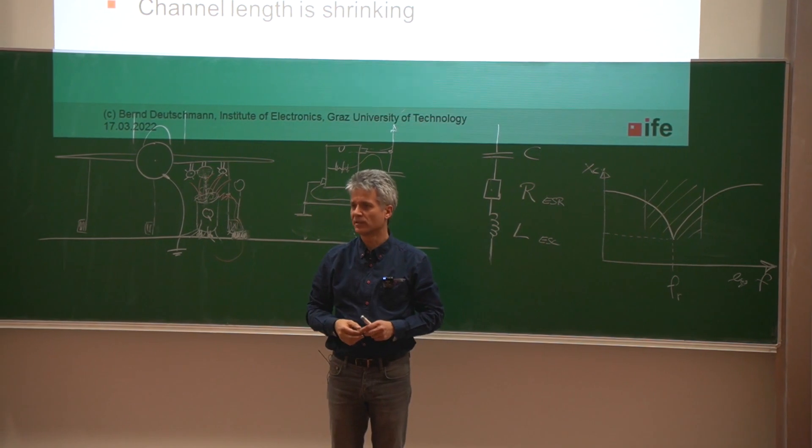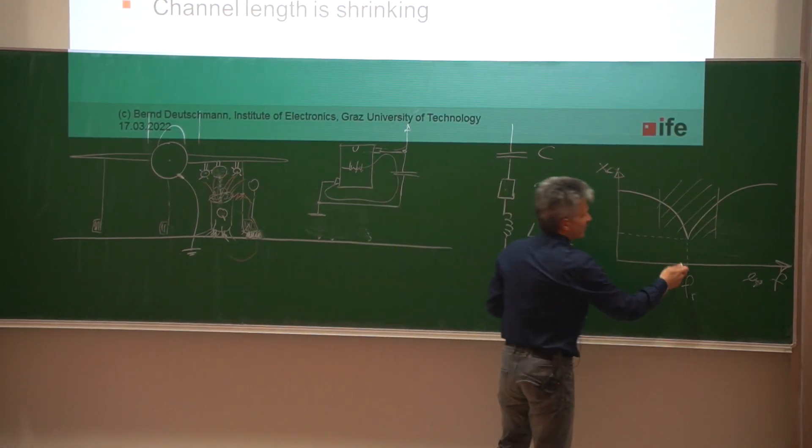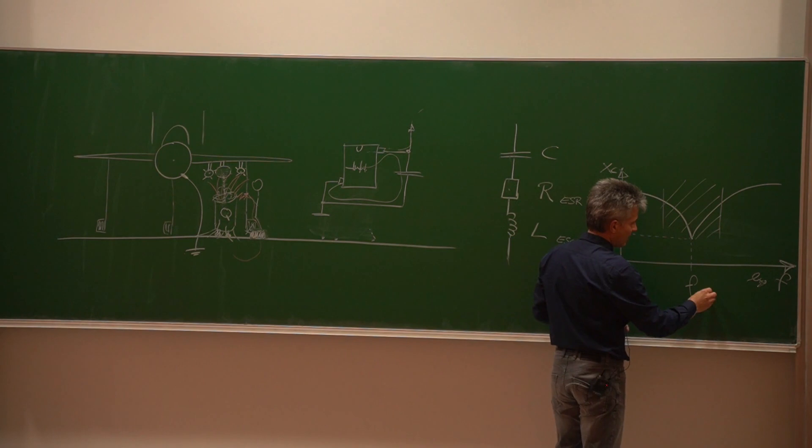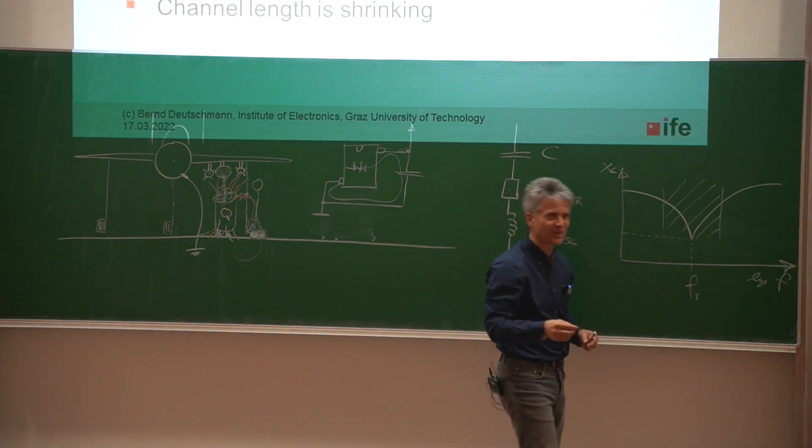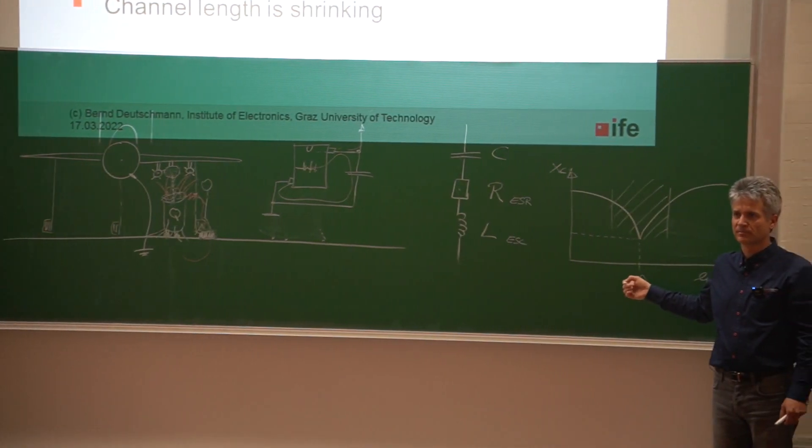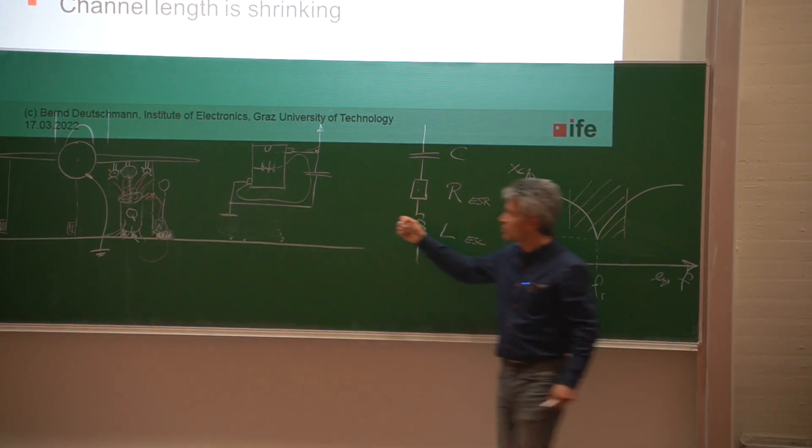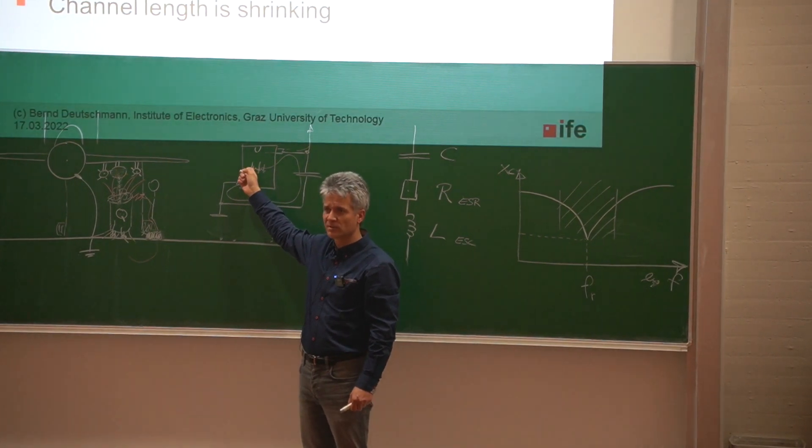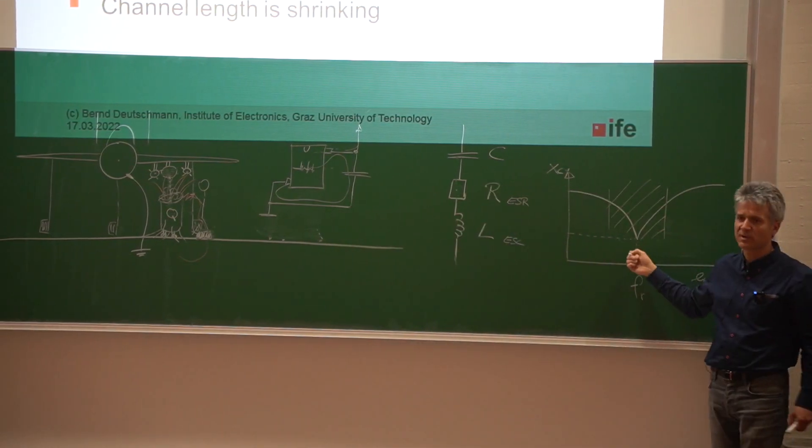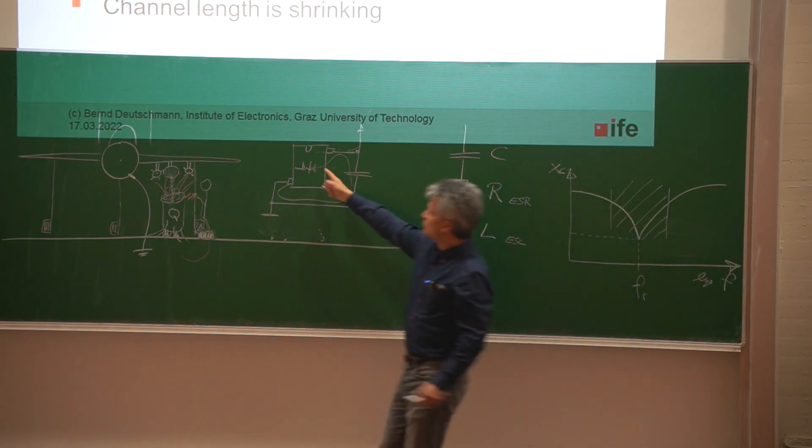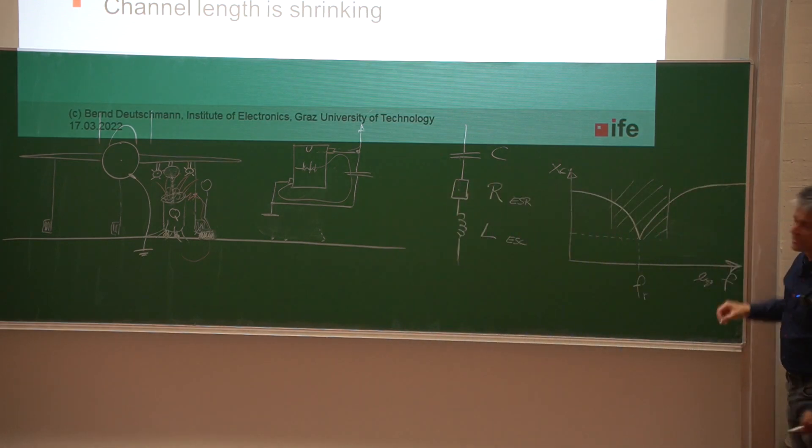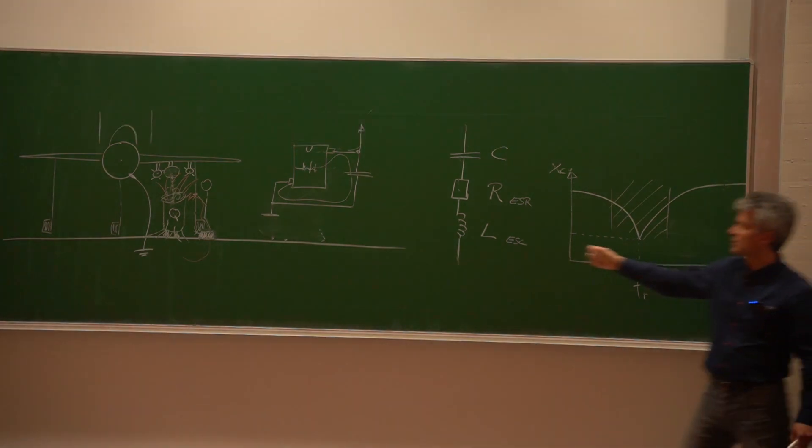Now coming back to the typical 100 nanofarad capacitor, very often the resonance frequency of the 100 nanofarad capacitor is in the lower megahertz range, 10 megahertz for example. If our internal switching activity of our microprocessor is working at 900 megahertz, we will see all the harmonics up to the gigahertz range. Do we really think that this 100 nanofarad capacitor is low impedance to short this noise back to the IC? Definitely not, because we are operating this capacitor over there in this frequency range, and there the inductance is dominating.